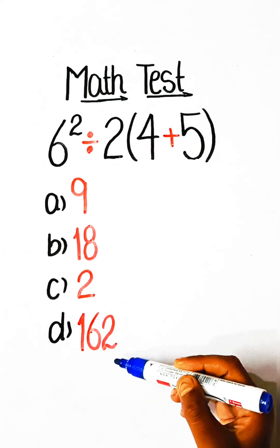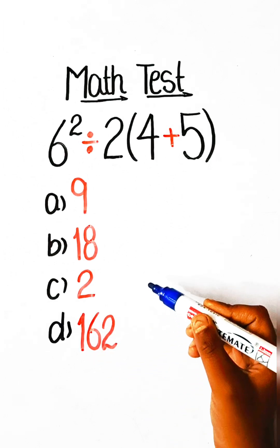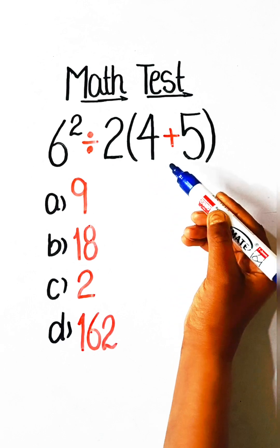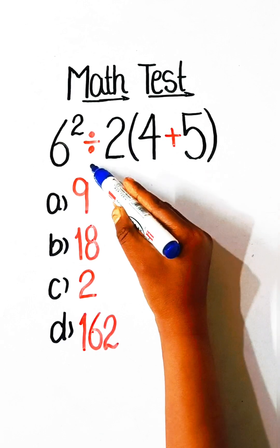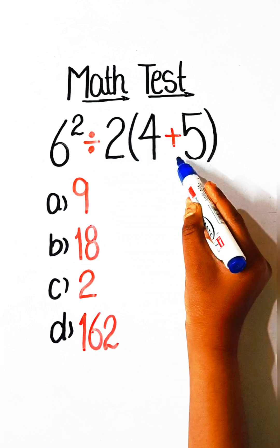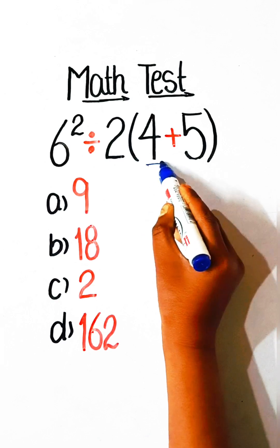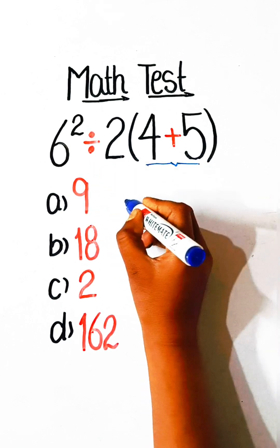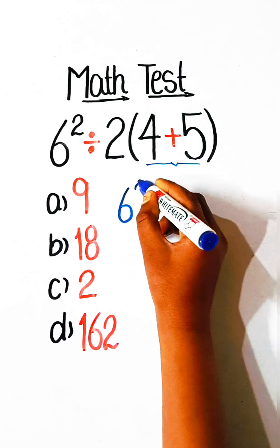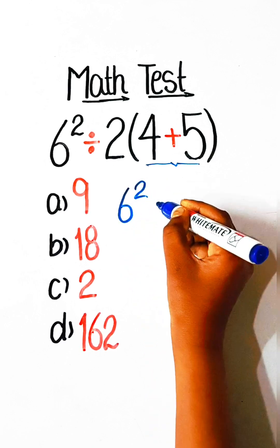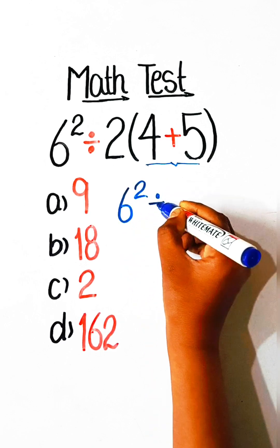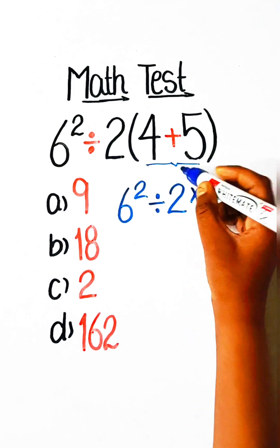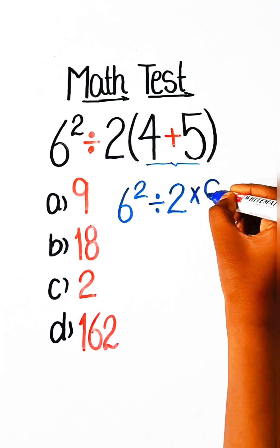So let's solve this. Here we have division and a bracket, so first we have to solve the bracket part. We will write: 6 squared divided by 2, multiply — and 4 plus 5 is 9.